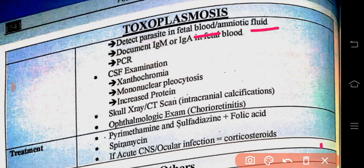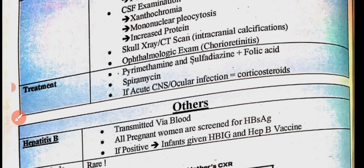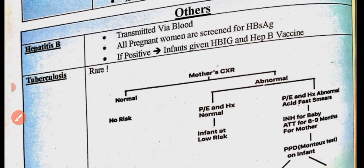Treatment of toxoplasmosis: pyrimethamine, sulfadiazine, and folic acid. If there is ocular infection or acute CNS infection, add corticosteroids. So the treatment to remember is pyrimethamine, sulfadiazine, folic acid, and corticosteroids for CNS or ocular involvement.